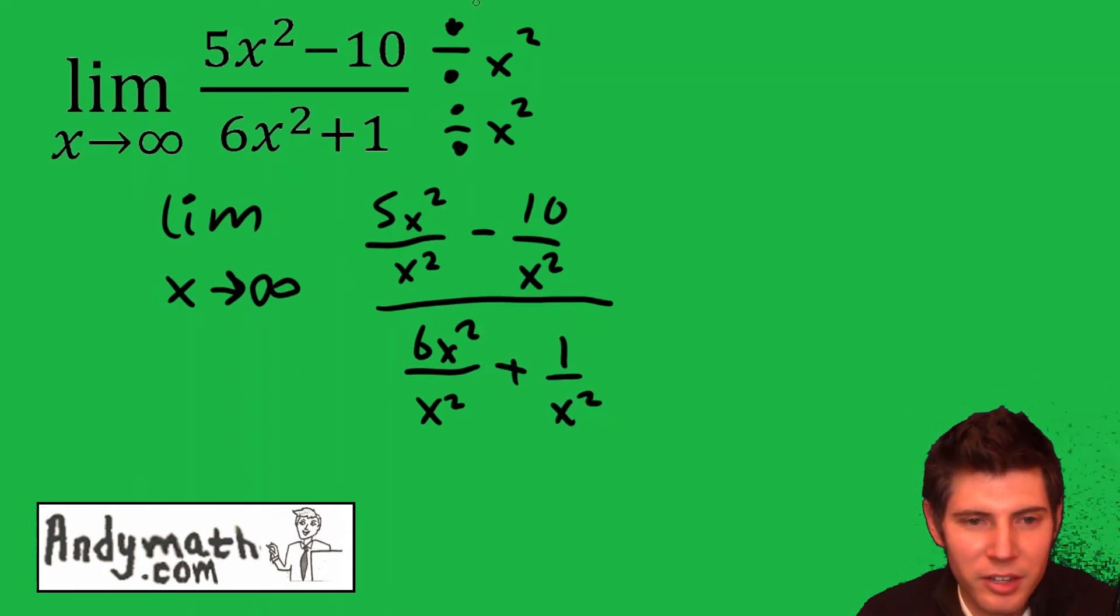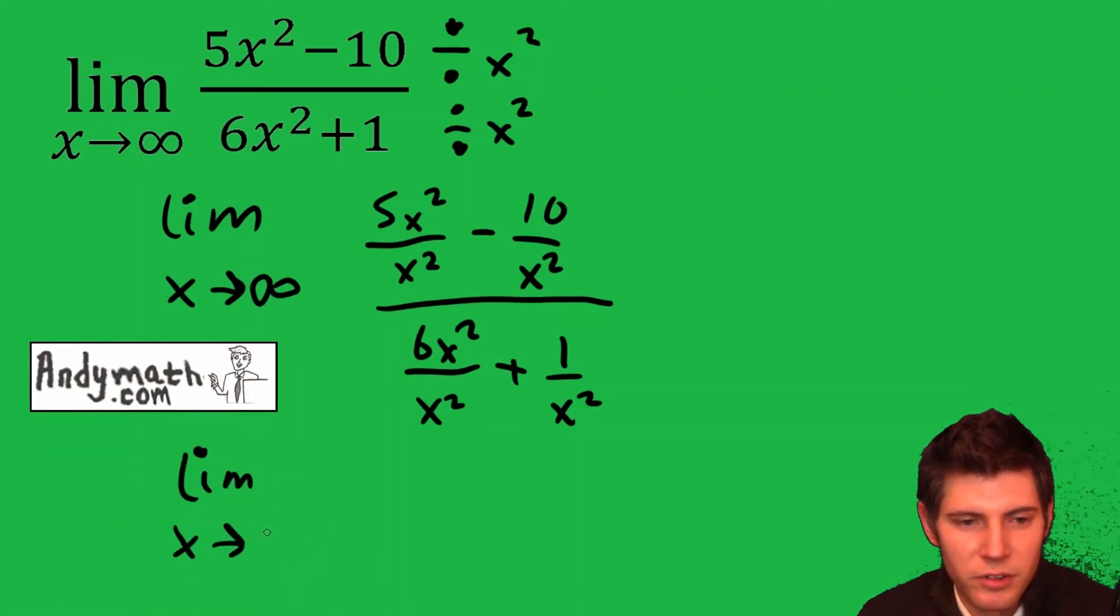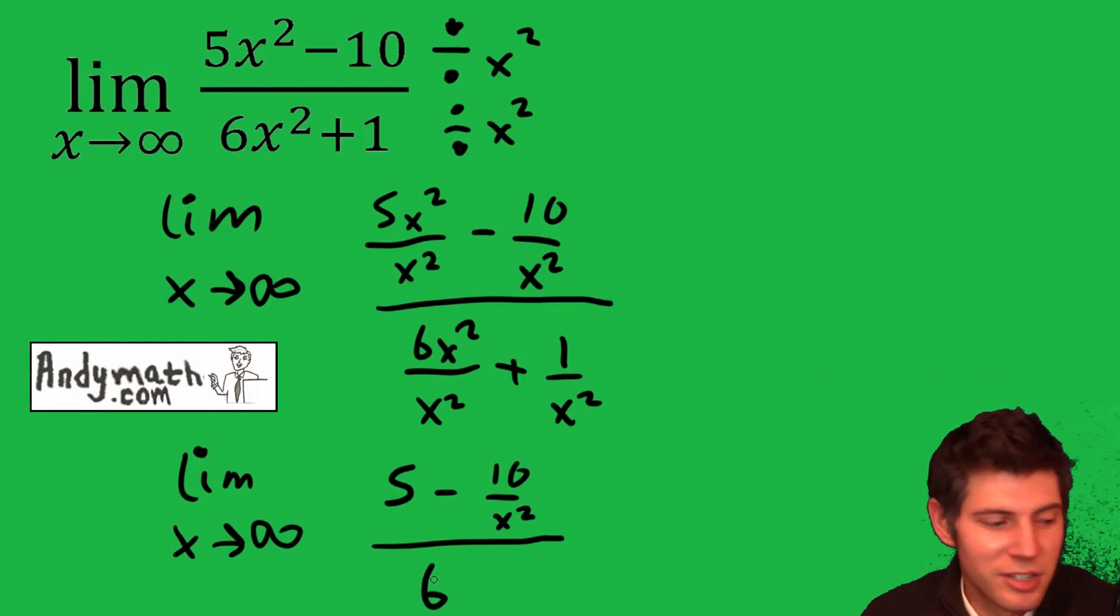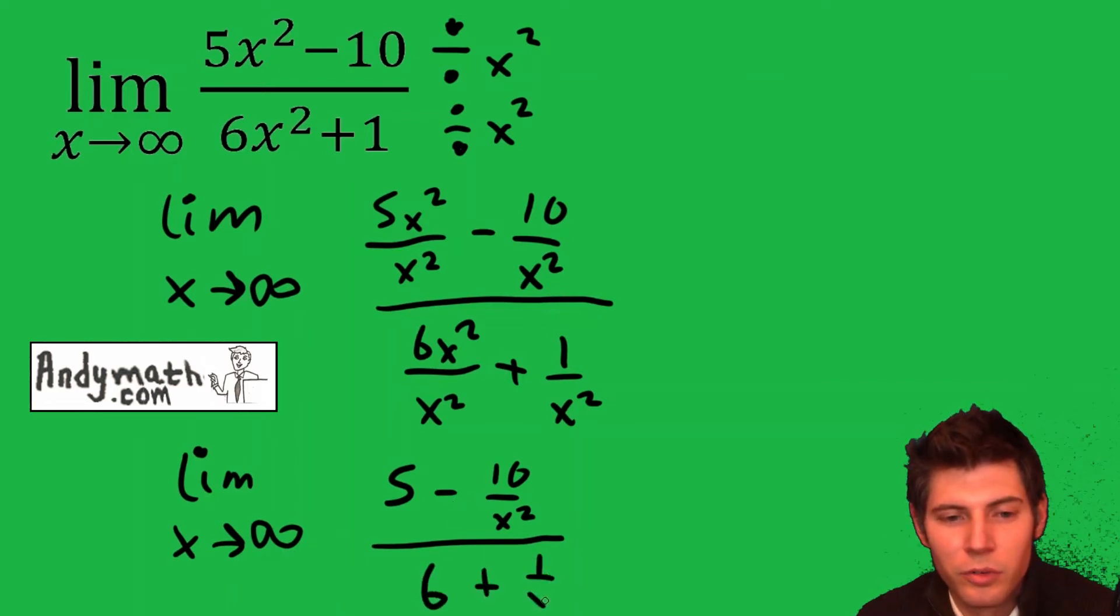Now we can simplify this. So I'll rewrite limit as x approaches infinity. So 5x squared over x squared is just 5 minus 10 over x squared divided by 6x squared over x squared is 6 plus 1 over x squared.